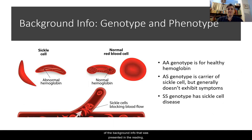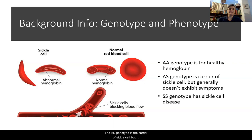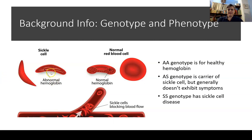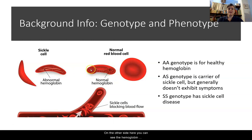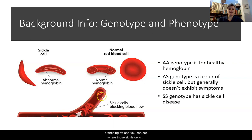First, we're going to go over some of the background info presented in the reading, then we'll get into the answers, because we're going to refer back to a lot of this information. The AA genotype is for healthy hemoglobin. The AS genotype is the carrier of sickle cell but is generally asymptomatic. The SS genotype has sickle cell disease. In the graphic on the left, you can see the long rigid structures in the sickled cell that cause the blood cell to extend into that sickle shape. On the other side, the hemoglobin subunits form a normal, healthy hemoglobin protein, allowing the red blood cell to maintain its normal shape. Below that, you can see a blood vessel branching off where sickled cells can cause a blockage in blood flow.